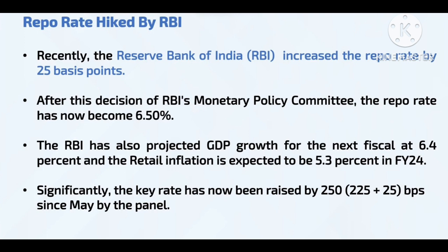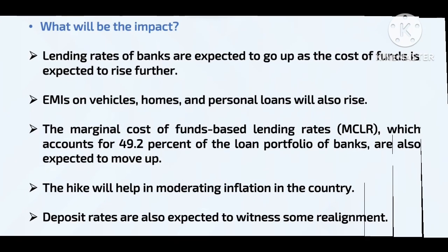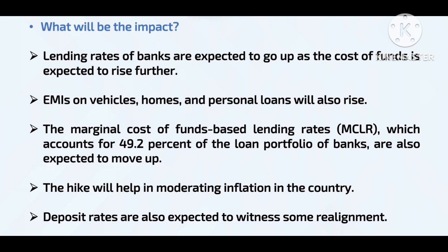There is a lot of inflation due to the pandemic and its after-effects, as well as the Russia-Ukraine war affecting food grains, fertilizer, and fuel. The RBI aims to reduce inflation through its tools. The target is 2-4%, and the RBI will work to bring inflation within that range using the repo rate.